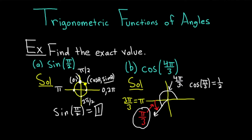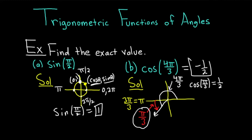Now you have to determine the sign. Here's a key fact: the trig function values of an angle and its reference angle are the same except possibly for sign. That is the key to the entire concept of trig functions of angles. Since cosine is the x-coordinate on the unit circle and we're at 4 pi over 3, which is in the third quadrant, it's going to be negative. So the answer is negative one half.